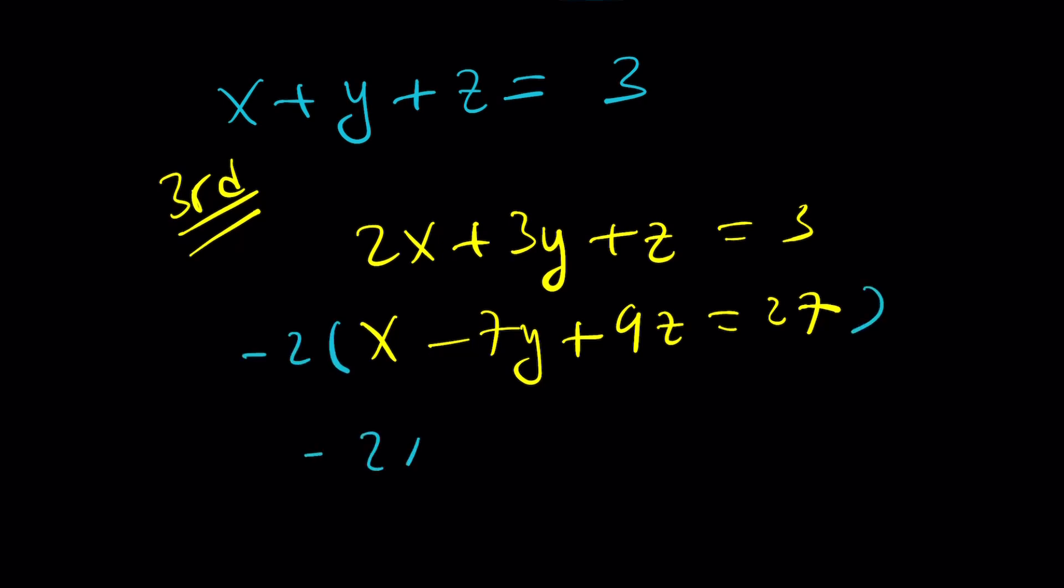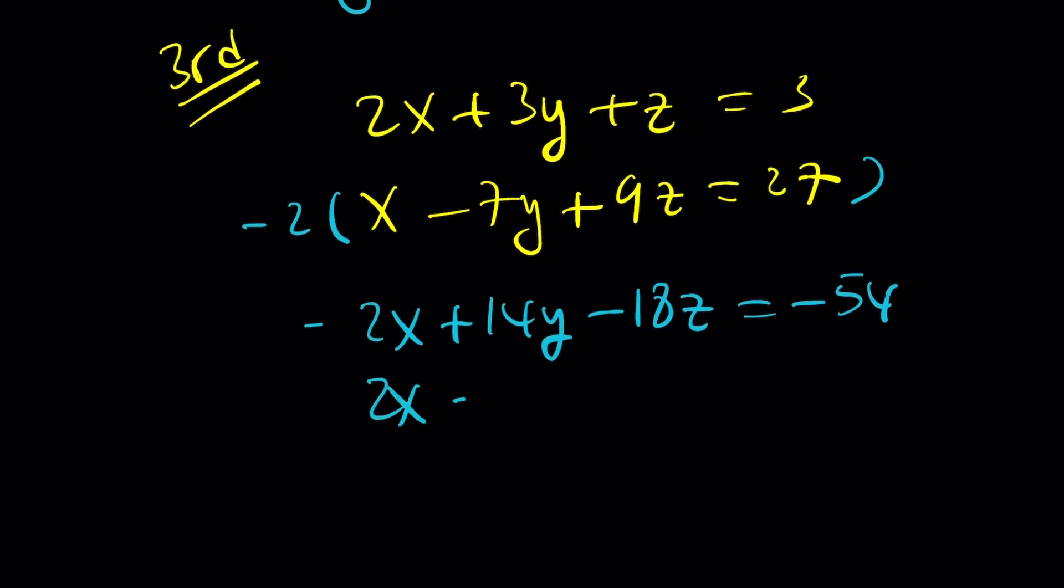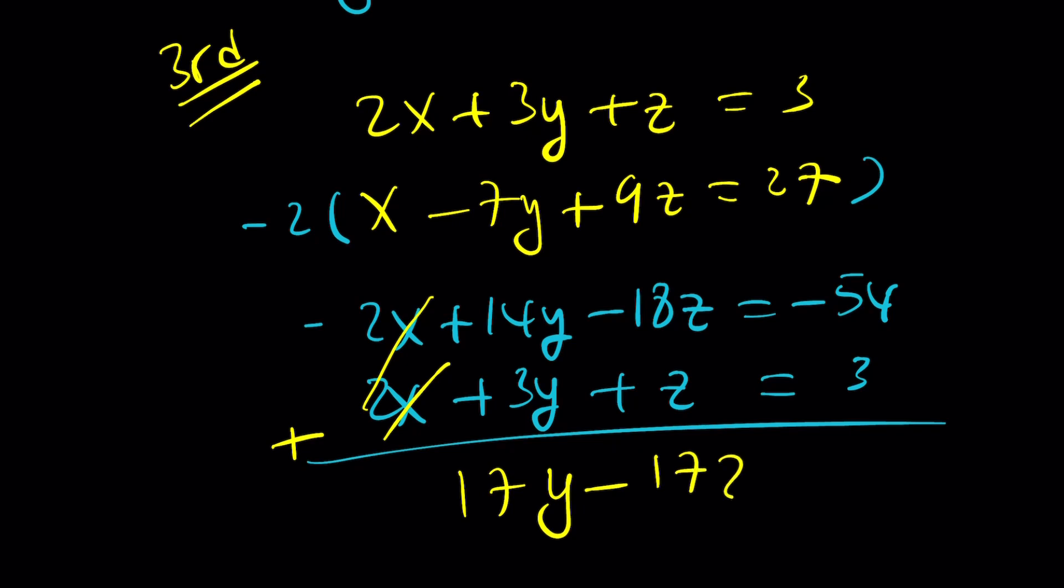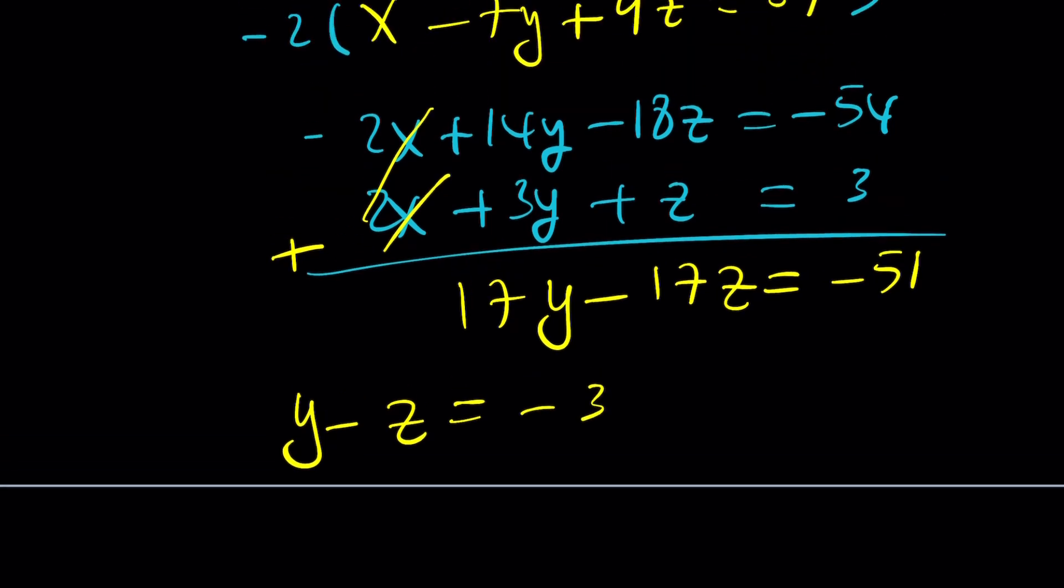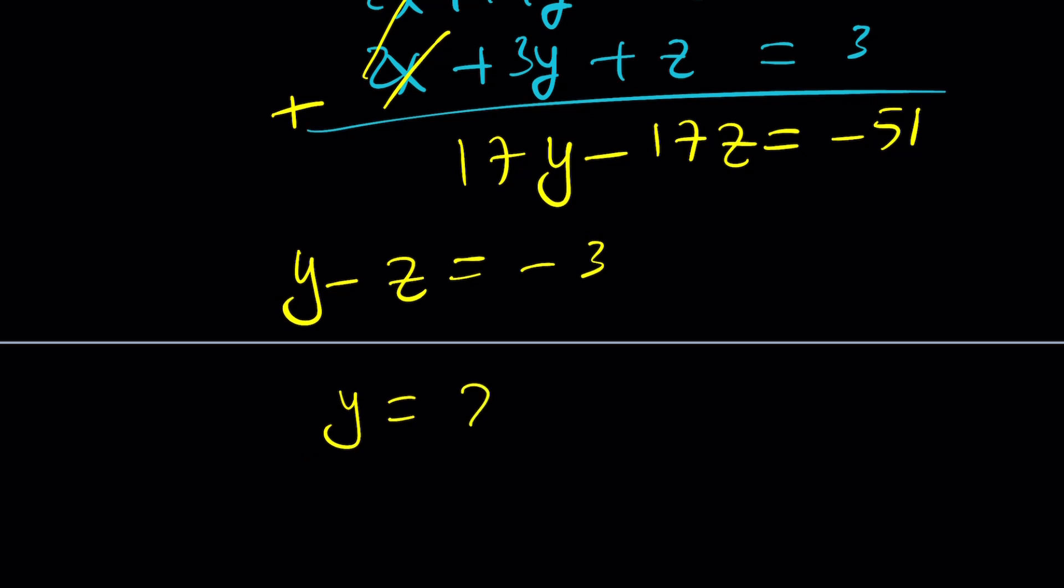And this is going to give us negative 2x plus 14y minus 18z equals negative 54. And the top equation is going to stay the same. 2x plus 3y plus z is equal to 3. When we add these up, we should be getting 17y minus 17z is equal to negative 51. And from here you're going to get y minus z equals negative 3, which is kind of interesting, right? So we kind of got a nice relationship. y is equal to z minus 3.